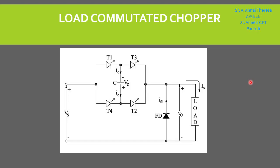In this power electronics session, we are going to see about the load commutated chopper. In the previous videos we have seen about the voltage commutated chopper and current commutated chopper. In this method, the conducting SCR is turned off when the load current flowing through the SCR either becomes zero due to the nature of the load circuit parameters, or the load current is transferred to another device from the conducting SCR.